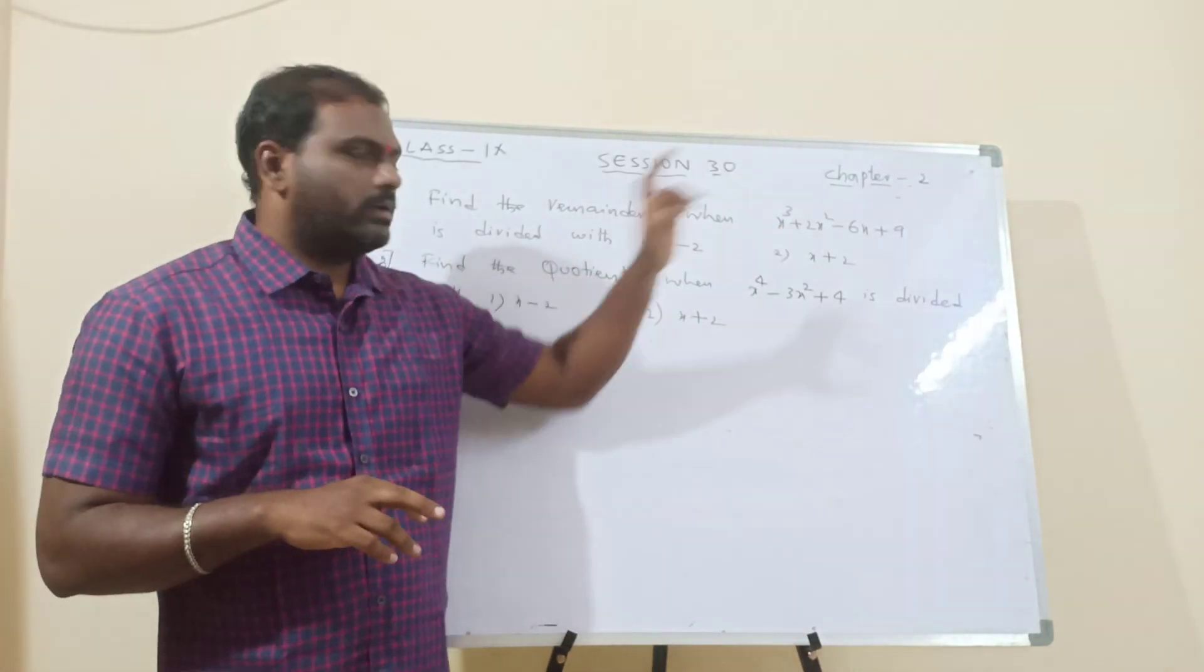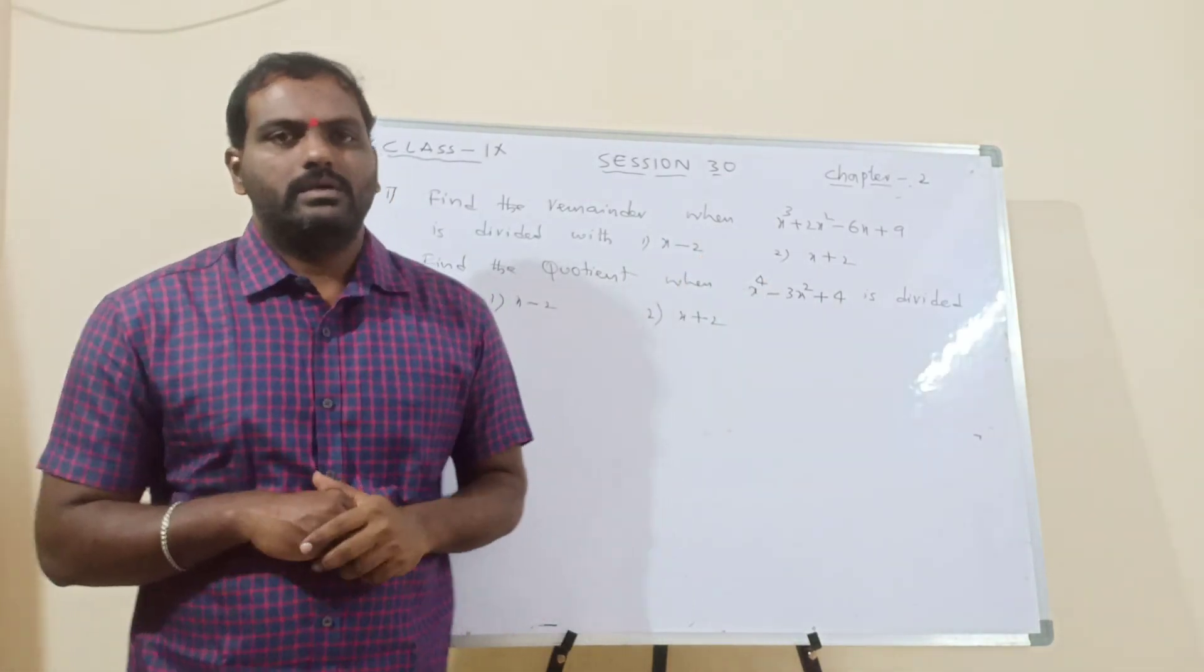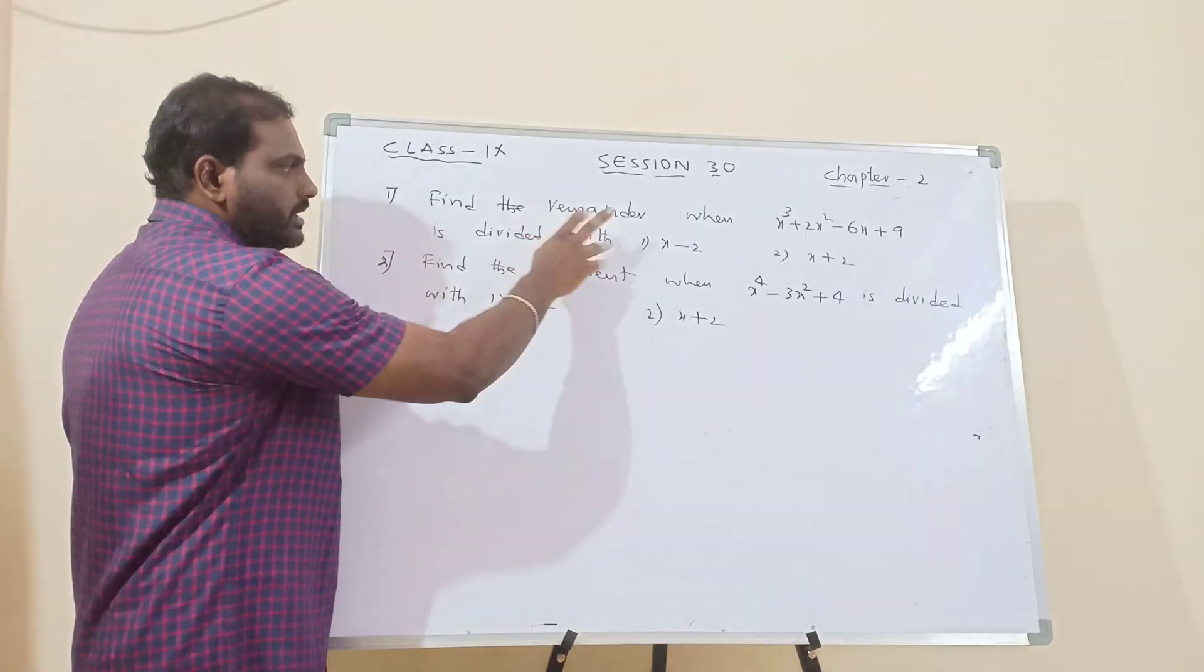So, assume this as polynomial of px and we have to find out p of 2 and p of minus 2. So, this is based on, we have to use remainder theorem.